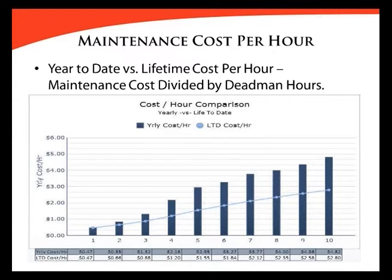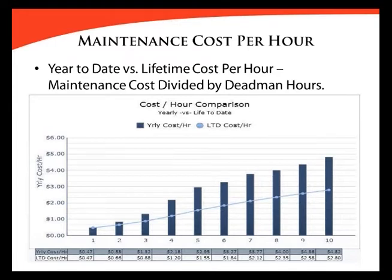However, if you look at lifetime cost per hour — that's the cumulative cost for maintenance divided by the cumulative hours of use — you'll find it's a much lower cost per hour. In this particular example, although the first year is identical at $0.47 for both the yearly and life-to-date cost per hour, if you scroll to the eighth year, the yearly cost per hour has risen to $4.00 an hour, whereas the life-to-date cost per hour is only $2.35. Neither is wrong to use — just keep in mind the age of the equipment when considering cost per hour in your decision-making process.